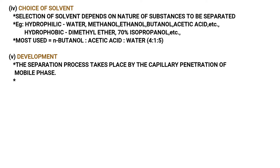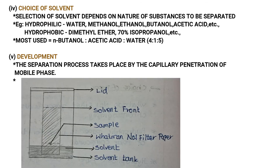Most cases involve hydrophilic separation. The most commonly used solvent is n-Butanol to Acetic Acid to Water in the ratio of 4:1:5. The fifth point is development. The separation process takes place by the capillary penetration of the mobile phase. The mobile phase moves up through the developer and the sample is separated.